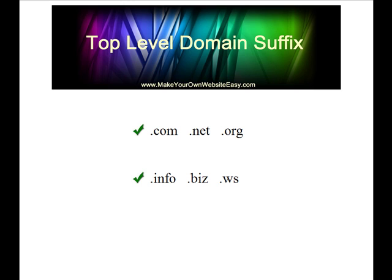If you can't get .com, .net, or .org, before going down to .info, .biz, or .ws, I would get creative about choosing your top-level domain. For instance, the keyword 'make your own website' was too competitive and already taken, so simply by putting the word 'easy' at the end we got our .com. You could put something at the beginning or end to keep the keyword in there. So if 'widgetgidgets.com' was taken, you could call it 'mywidgetgidgets.com' and still have your keyword in a .com without diluting it too much.